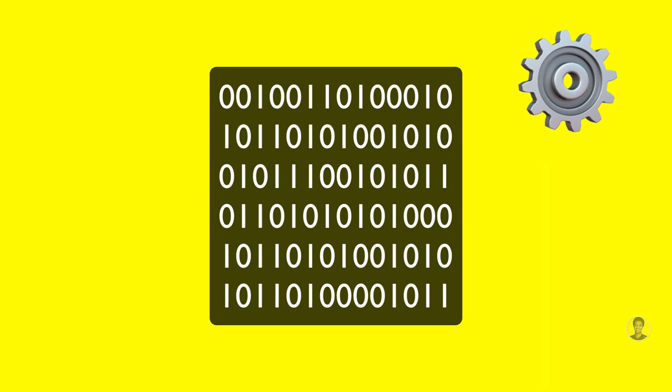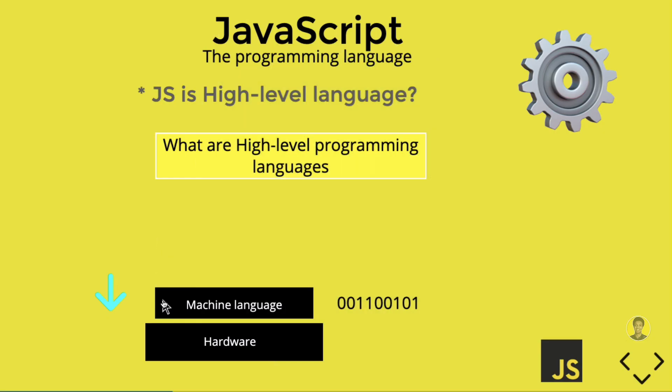For example, if you want to give instructions to a computer, you can use binary instructions — 0s and 1s — which is what you want to use at the machine level.